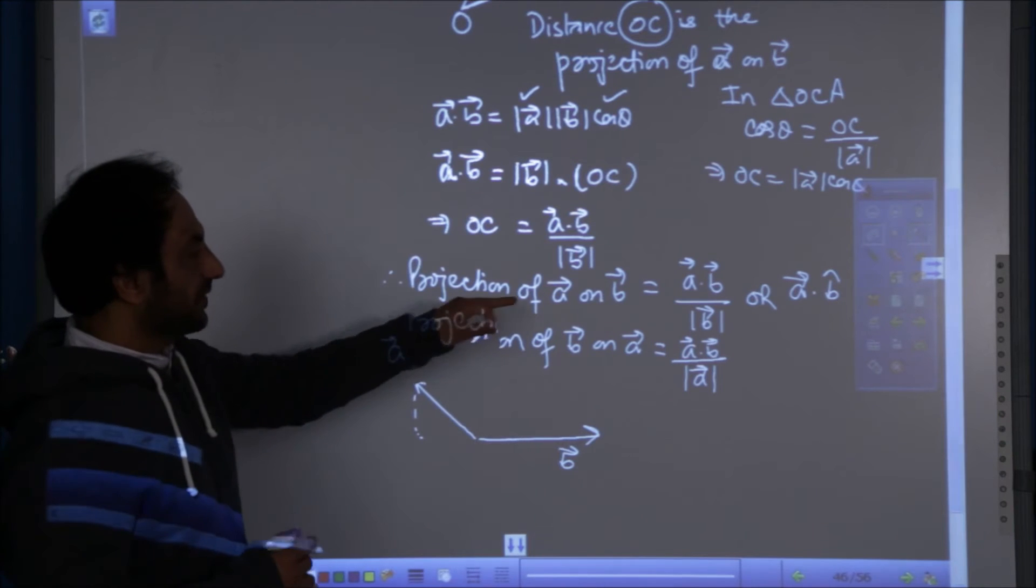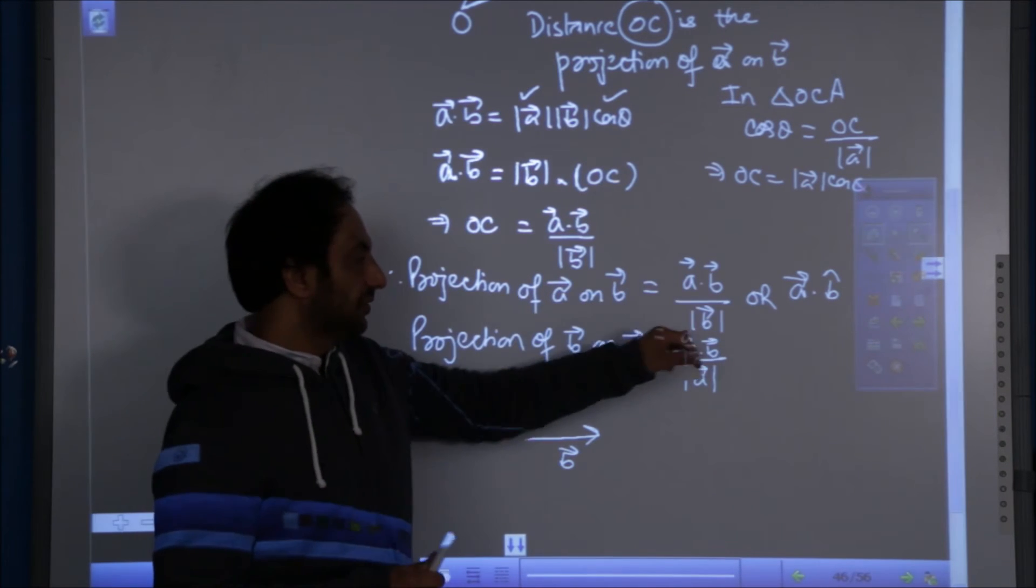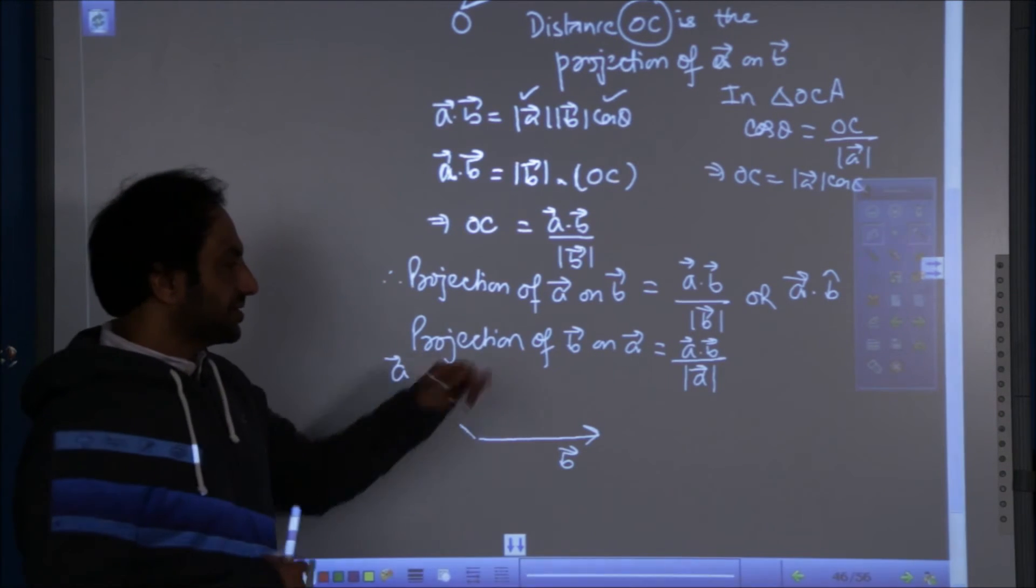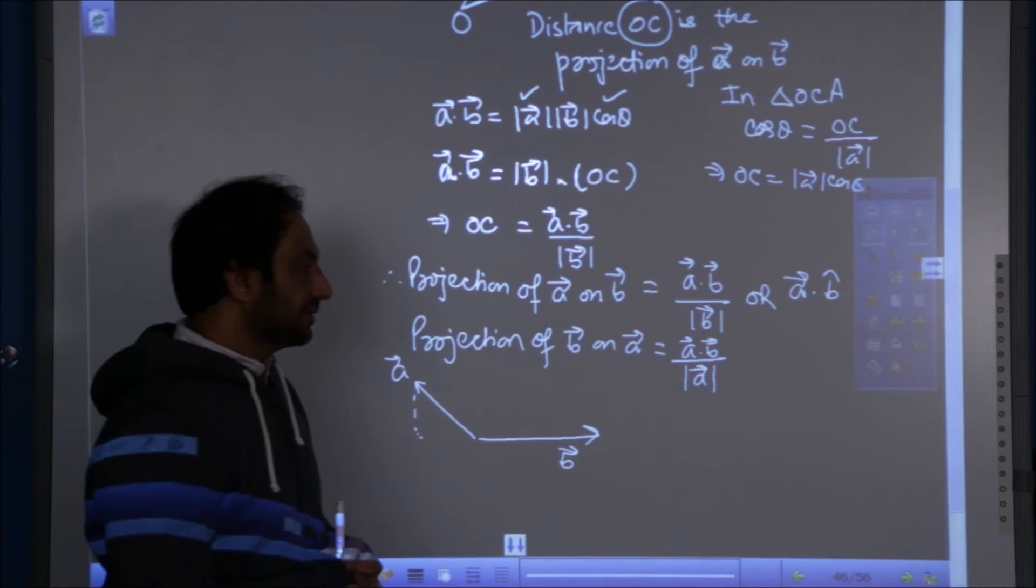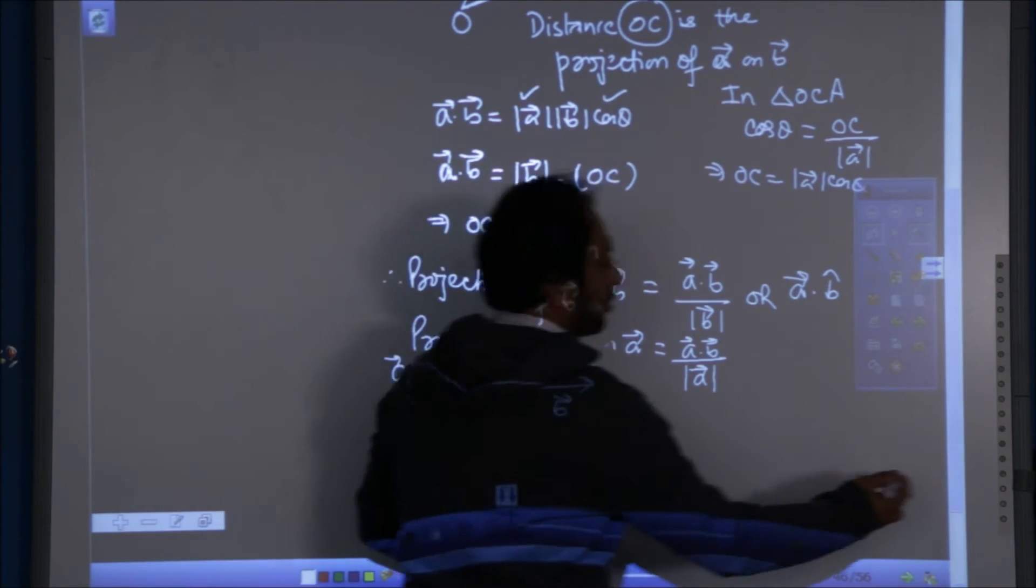So projection of A on B is A dot B over mod B and projection of B on A is A dot B over mod A.